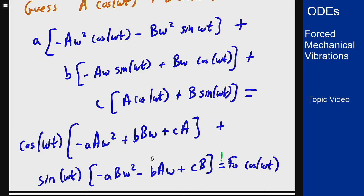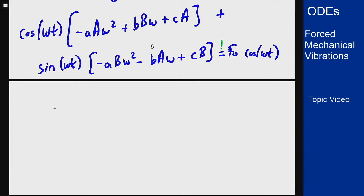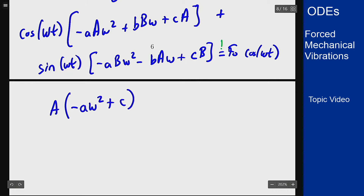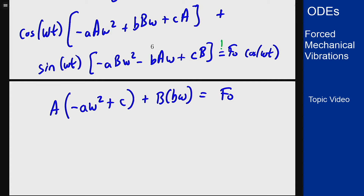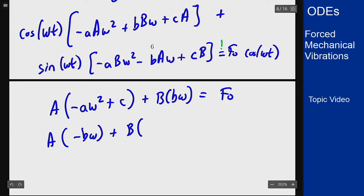Now I just want to match up my coefficients. I want A times negative a omega squared plus c, plus B times b omega to equal f0 — that's the coefficient of cosine. Then for sine, I'm going to have A times negative b omega plus B times negative a omega squared plus c should equal zero, because I want f0 cosine and zero times sine on the other side.